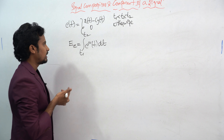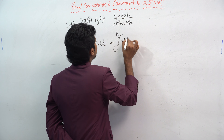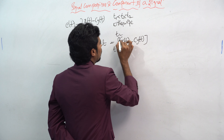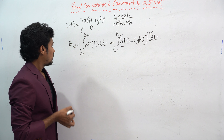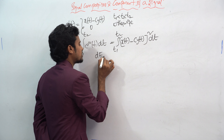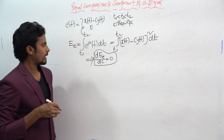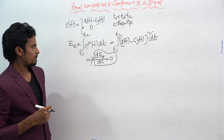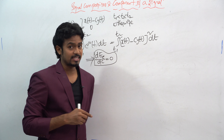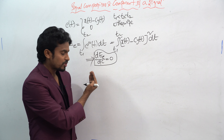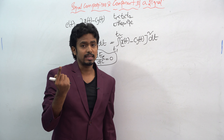Substituting, the integral becomes the integral from t1 to t2 of (x(t) − c·y(t))² dt. We then differentiate this with respect to c and set it equal to 0. In the definite integral, t is the dummy variable, and we need to minimize the error energy E with respect to c.